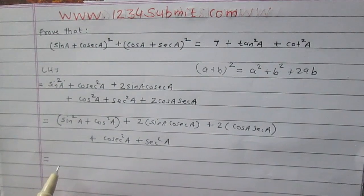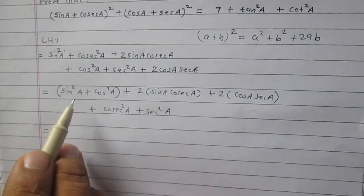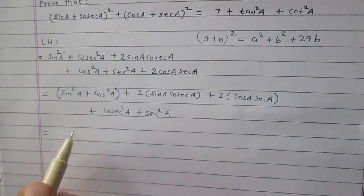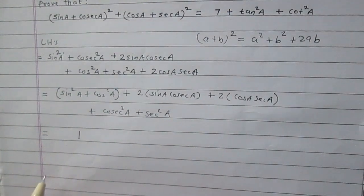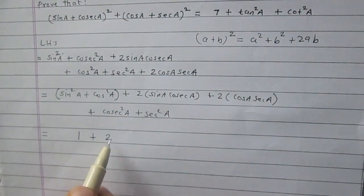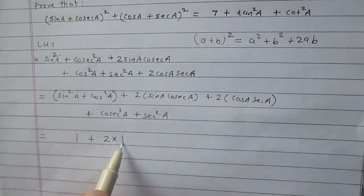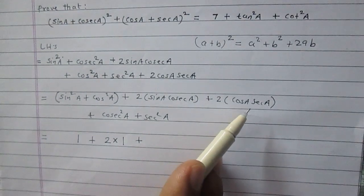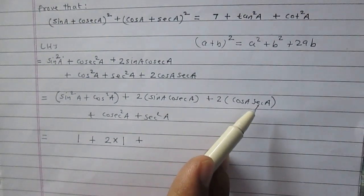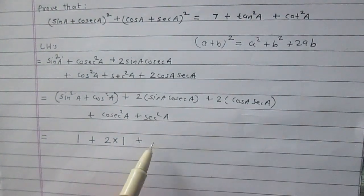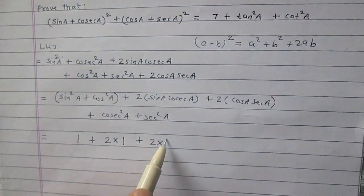As we have discussed earlier, sin square a plus cos square a is 1, so I am writing here 1. Here, 2 multiplied by sin a cosec a is twice of 1. Once again, cos a and sec a are reciprocal of each other, so the result is 1. So I am writing here 2 multiplied by 1.